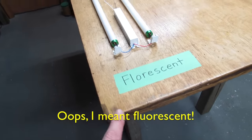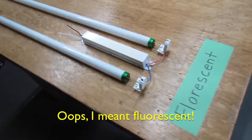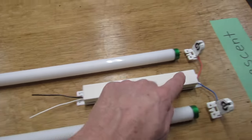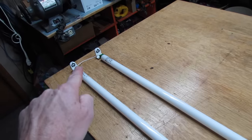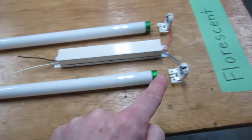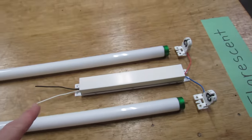I spread this out on the table to show you. This is a fluorescent setup. Here's your ballast. Your power comes in, goes over to that contact, down the length of the bulb, across to the other side, then back down, back into the ballast, and then back to neutral.